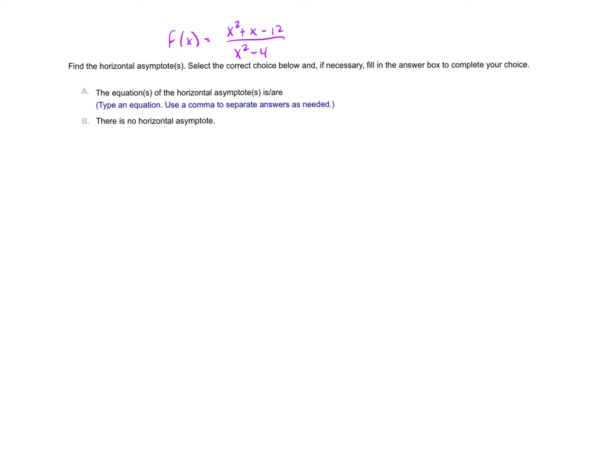Finding horizontal asymptotes involves comparing the degree of the numerator and the denominator, which is 2 in this case. There's a chart: if the degree of the numerator is smaller than the degree of the denominator, your horizontal asymptote is y equals 0.